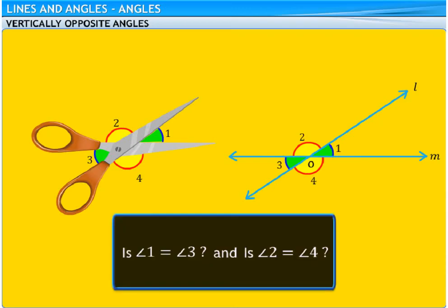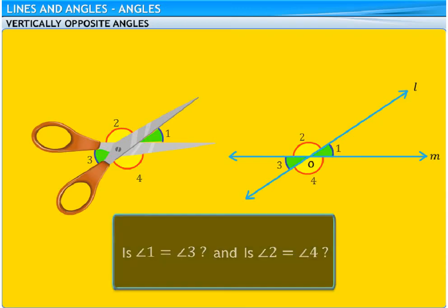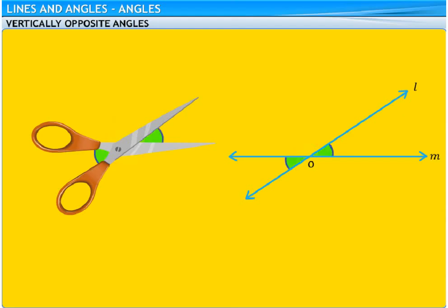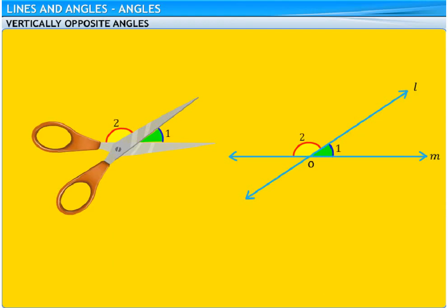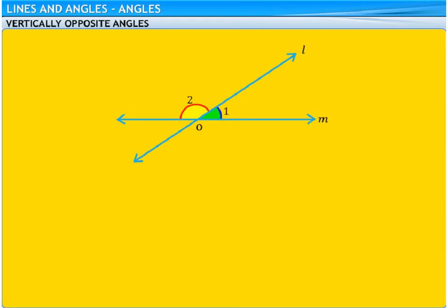But, are these vertically opposite angles equal? Let's use this experiment and try to prove that vertically opposite angles are equal. Take a look at angles 1 and 2. We can see that these angles form a linear pair, which means the sum of these angles equals 180 degrees. Let's mark this result as 1.